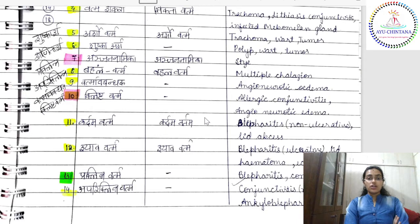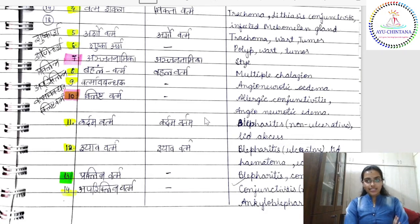I remember saying the five basic points — the basic data — that you have to write whenever any Shalakya Roga is given in your exams. Whether it is a Nasa Roga, Karuna Roga, Netra Roga, Gala Roga, or Kantha Roga, you should write five basic details: first, what kind of roga it is; second, classification according to Doshas; third, the Sthana; fourth, whether it is Sadhya, Asadhya, or Yapya; fifth, if Sadhya, how you would treat it. And the last point is the correlation.